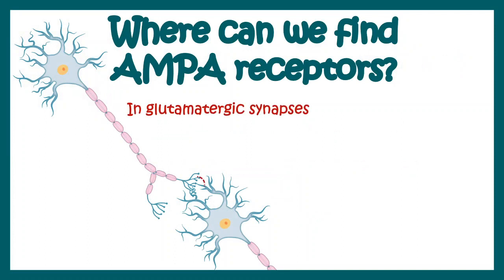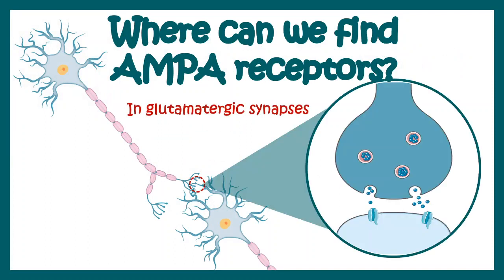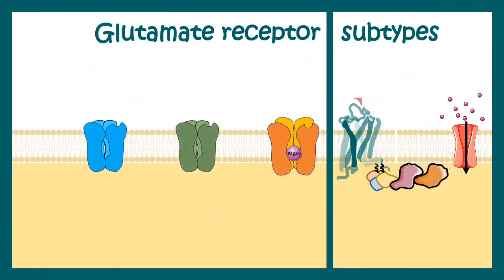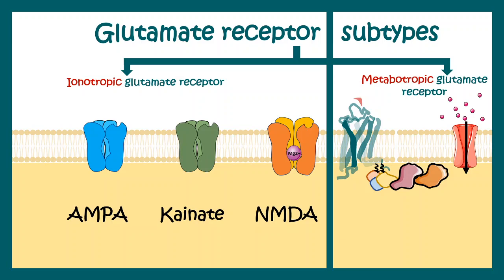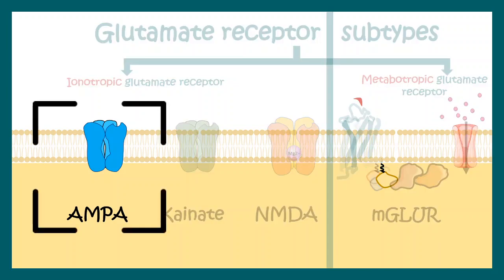AMPA receptors are found in the glutamatergic synapse, specifically at the post-synaptic density. Under glutamate receptors, there are many ionotropic and metabotropic receptors, including AMPA receptors, kainate receptors, and NMDA receptors — all of which are ionotropic, meaning they are ligand-gated ion channels. The metabotropic glutamate receptors are known as mGluRs and use second messengers for functioning. In this video, we focus on the AMPA receptor only.